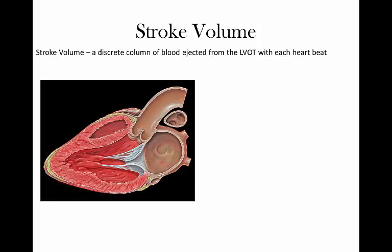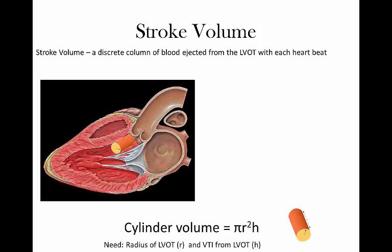Stroke volume, I hope we can all agree, is a discrete column or cylinder of blood that is ejected from the left ventricular outflow tract during systole. Taking this quite literally, we will place a cylinder here in the LVOT and imagine that that is your actual systolic event occurring. This is important because going forward, you need to think of this cylinder and its volume, and this will guide us down the path of how to determine the stroke volume in each systolic event.